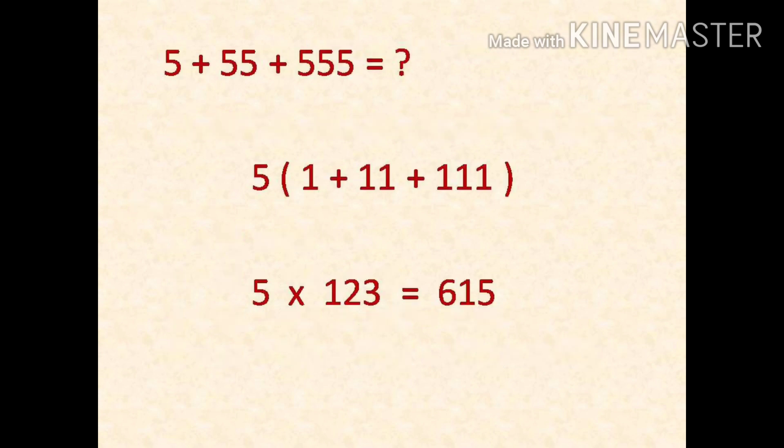We have 5 plus 55 plus 555. First, take 5 common, so we get inside the bracket 1 plus 11 plus 111. We know 1 plus 11 plus 111 equals 123. Just multiply 123 with 5, so we get the answer 615 in a single step.